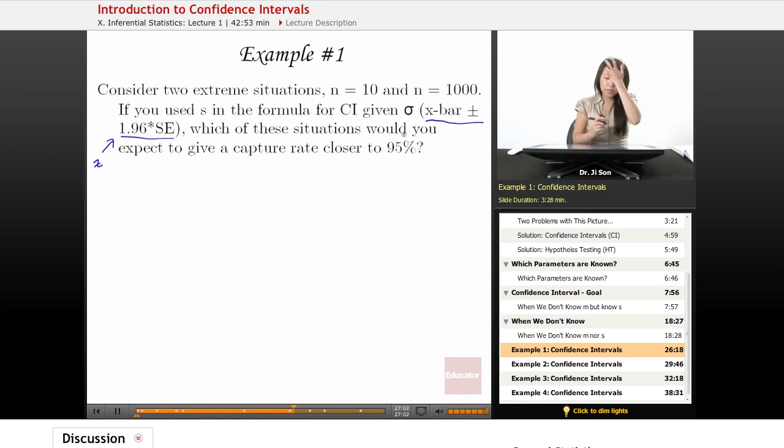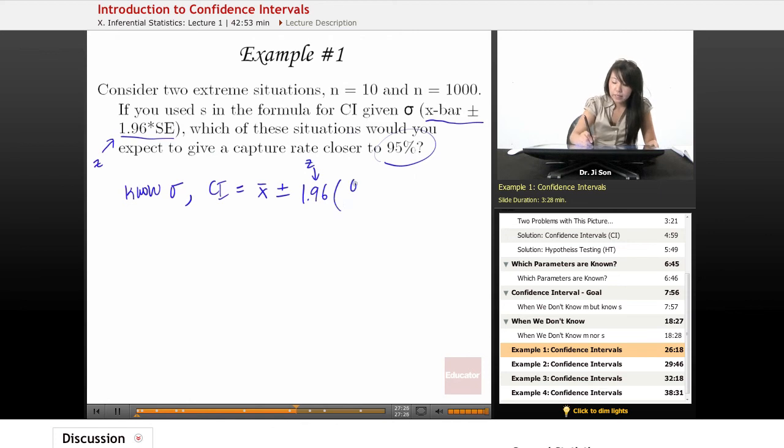Here's what this question is really asking. So when you know sigma for confidence interval, you really need x-bar plus or minus, so this is for 95% confidence interval, 1.96, so that's my z, times sigma over square root of N.